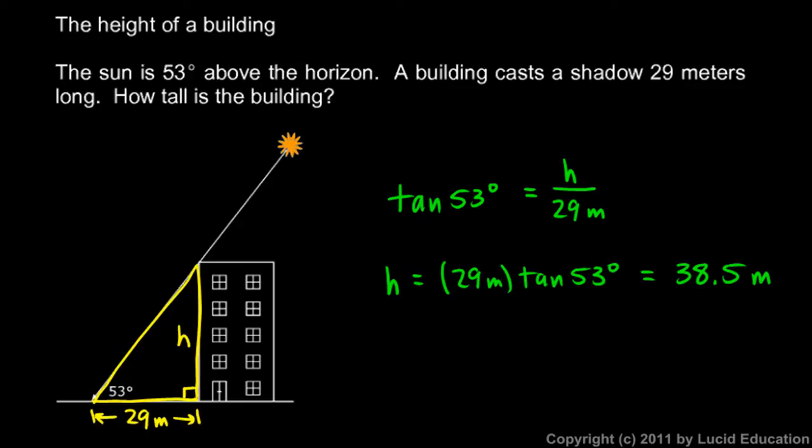And this method would work for anything, not just a building. This could be a tree or a cliff, any object that we're trying to find the height of. And we can do that without actually going up to the top of the object. We might not be able to get to the top of the building, or the top of the tree, or it might be a dangerous cliff that we don't want to climb. But all of these measurements can be made from the ground, and from those measurements, we can accurately calculate an answer if we know some trigonometry.